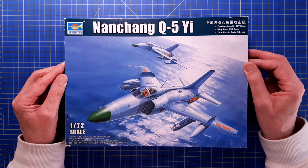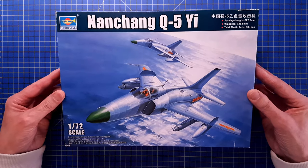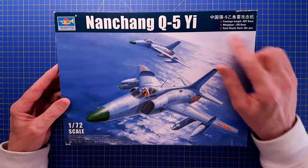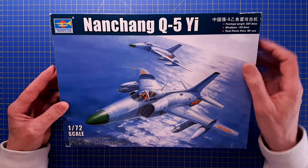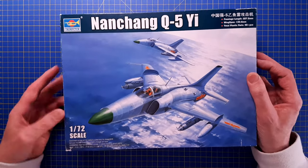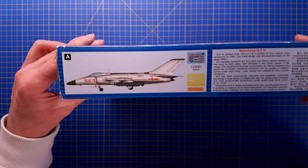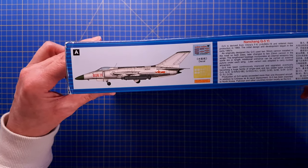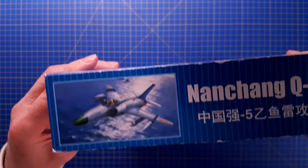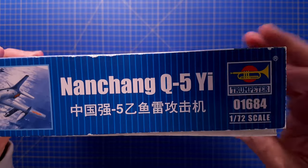Let's have a look at the kit box. We see that it's a kit with 90 plus pieces, 1/72 scale. We have a picture of the aircraft illustration and the kit number 01684.